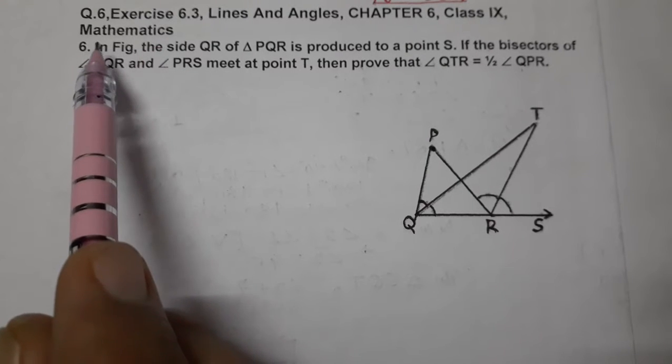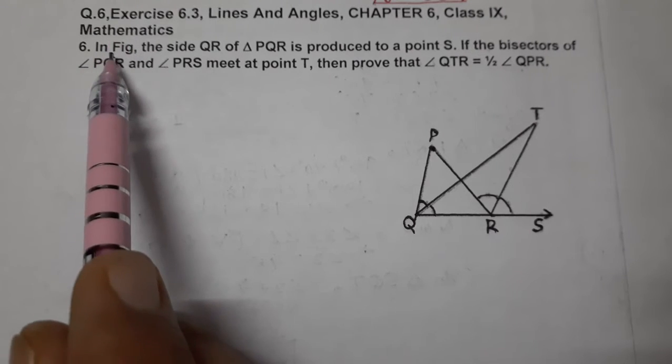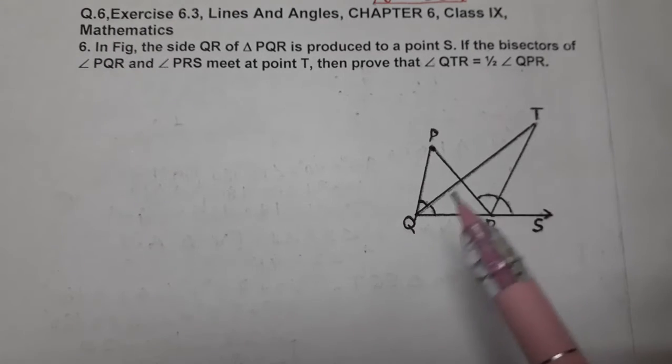What is the question? This is the last question of the exercise and chapter also. In the figure, see the figure, the side QR of triangle PQR is produced to a point S.